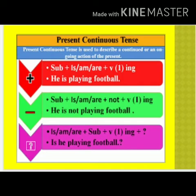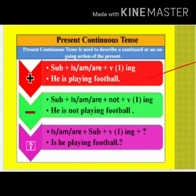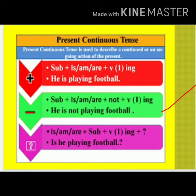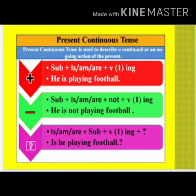The second sub-type is present continuous tense. Present continuous is used to describe a continuing action taking place at the time of speaking. For a positive affirmative sentence, we use: Subject + is/am/are + Verb-ing + Object. Example: 'He is playing football' and 'You are watching this video.' For a negative sentence: Subject + is/am/are + not + Verb-ing + Object. Example: 'He is not playing football.' For interrogative: Is/Am/Are + Subject + Verb-ing + Object + question mark. Example: 'Is he playing football?' and 'Are you watching the video?'